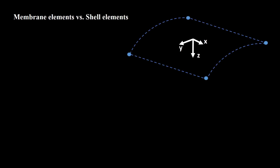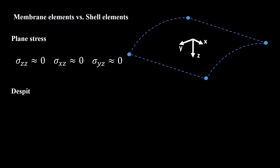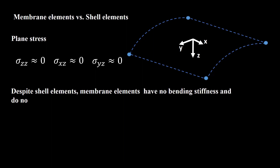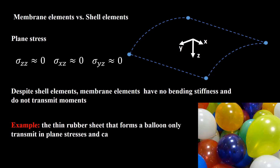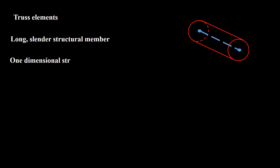When can we use membrane elements? Similar to thin shell elements, membrane elements are appropriate for models with small thickness that include only in-plane stresses. But unlike shell elements, membrane elements have no bending stiffness and do not transmit moments. For example, the thin rubber sheet that forms a balloon only transmits in-plane stresses and can be modeled as an in-plane stress membrane. Truss elements are the simplest elements with regard to creating geometry and formulation. Truss elements model bars — long, slender structural members that can transmit only axial force; no moments or forces perpendicular to the center line are supported.